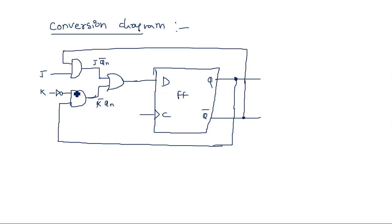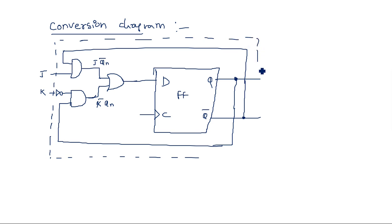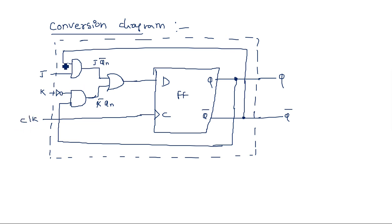This is the logic circuit needed to convert a D flip-flop into a JK flip-flop. Internally this setup performs the conversion, while externally only J, K, and clock are available as inputs, along with Q and Q-bar as outputs — making it behave as a JK flip-flop. This is the essence of flip-flop conversion.